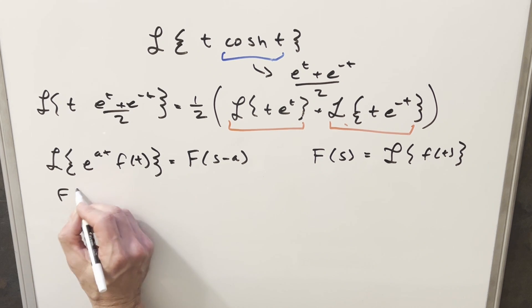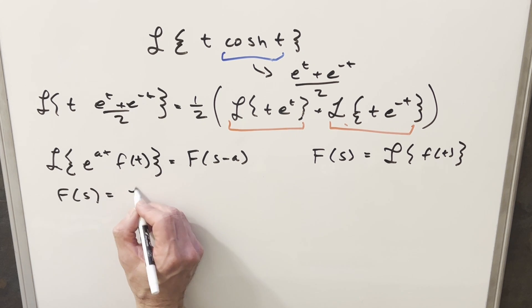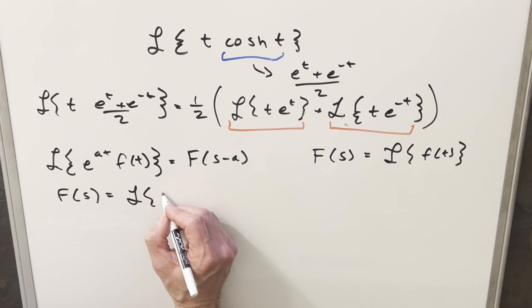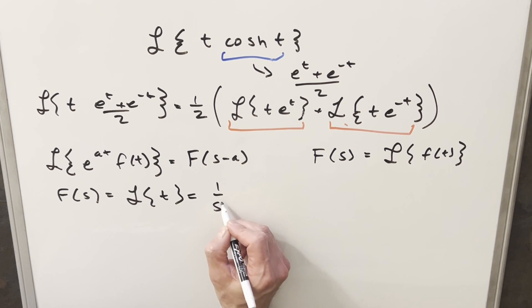First let's find this f of s part. Our f of s is going to be just the Laplace transform of t. We found this value in a previous video. This is just going to be one over s squared.